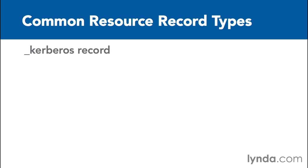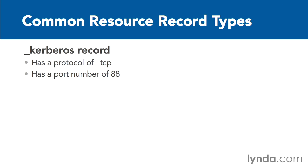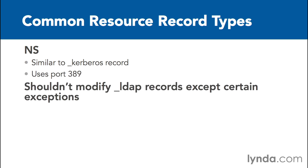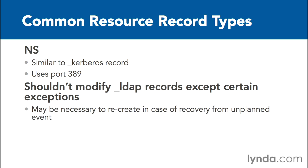The Kerberos record has a protocol of TCP and a port number of 88. The LDAP SRV record is similar to the Kerberos record, except that it uses port 389 instead of port 88. One thing to keep in mind about the LDAP records is that you really shouldn't modify them except in very rare cases — one such case being to recreate them in a recovery from some kind of unplanned event.